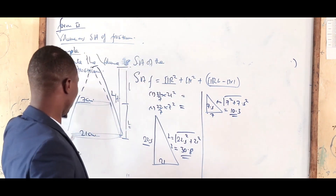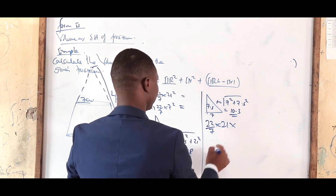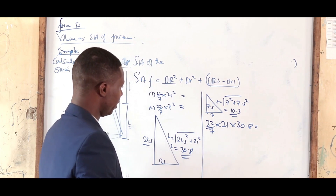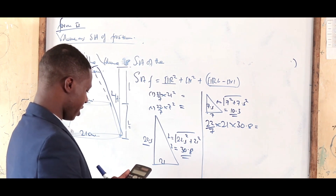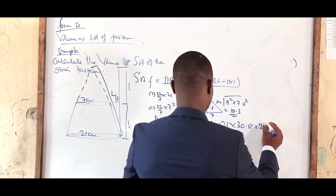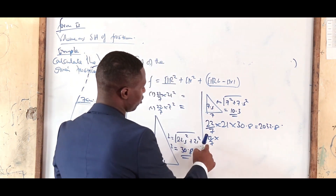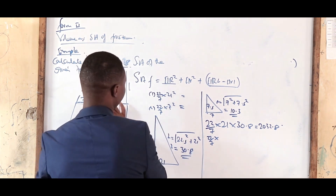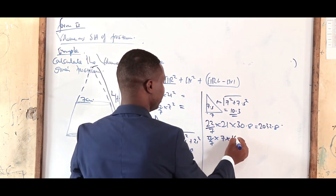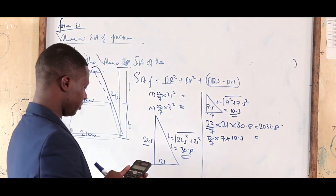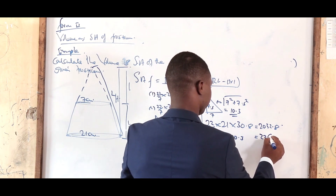The curved surface of the whole cone equals 22/7 × 21 × 30.8 = 2032.8 cm². The curved surface of the smaller cone equals 22/7 × 7 × 10.3 = 226.6 cm².